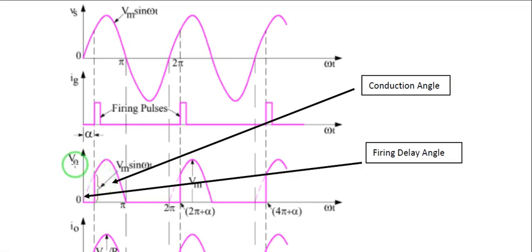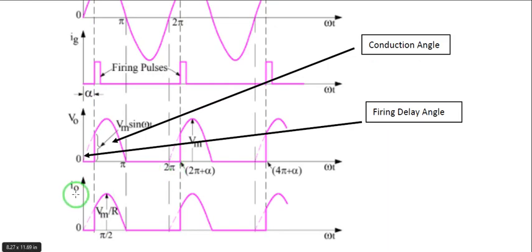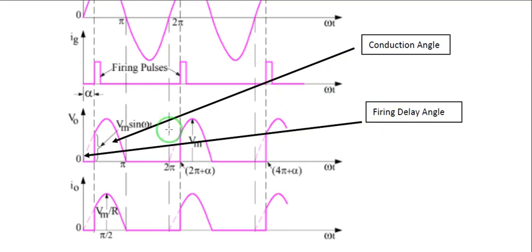VO is the voltage across the load, and IO is the load current. If we plot the load current, it will appear similar to the output voltage. The conduction angle is the number of degrees of an AC cycle during which the SCR is turned on. The firing delay angle is the number of degrees of an AC cycle that elapses before the SCR is turned on. The waveforms are properly aligned.